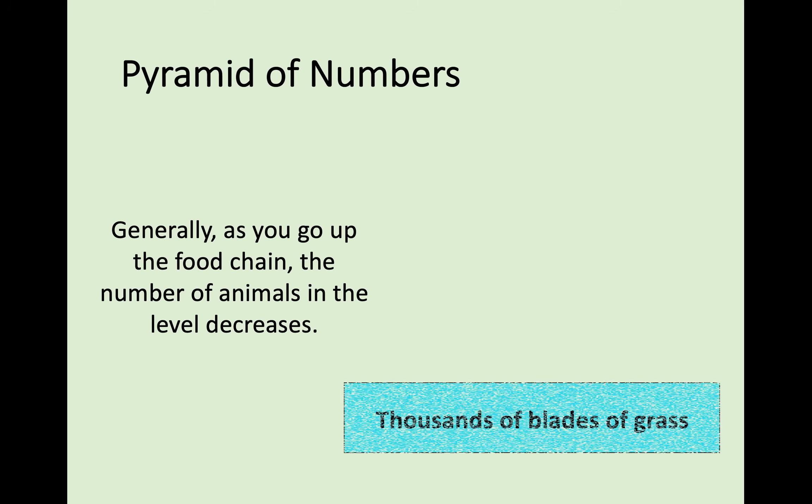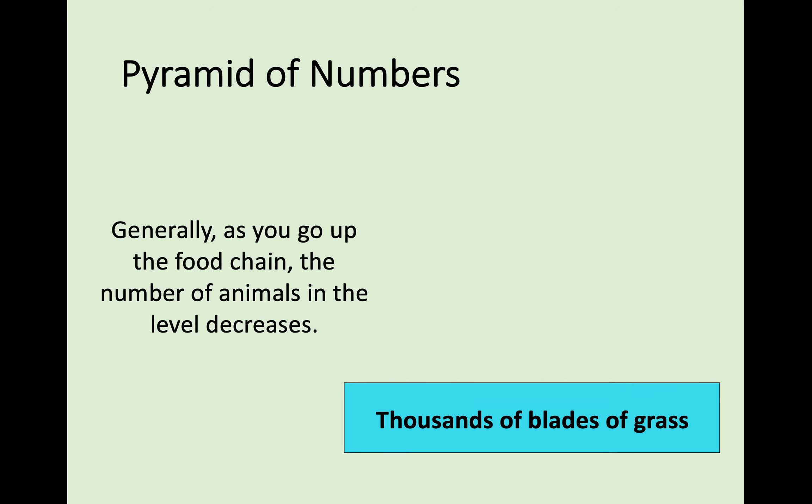Let's look at some examples. In this pyramid of numbers, you could start off with grass, a producer at the base of the pyramid. In this case, you could have thousands of blades of grass. Dozens of snails eat those thousands of blades of grass. And from those dozens of snails, one bird eats the snails. There is more grass than there are snails, more snails than there are birds. You are working up from producers to primary consumers to secondary consumers in this fairly standard pyramid shape.